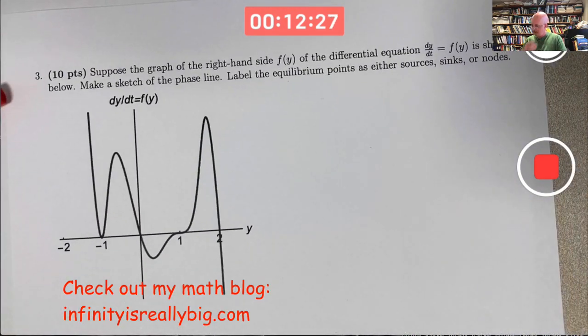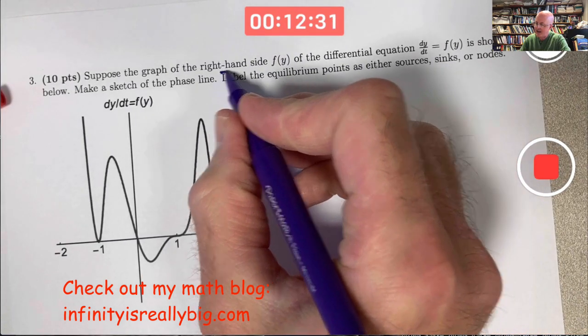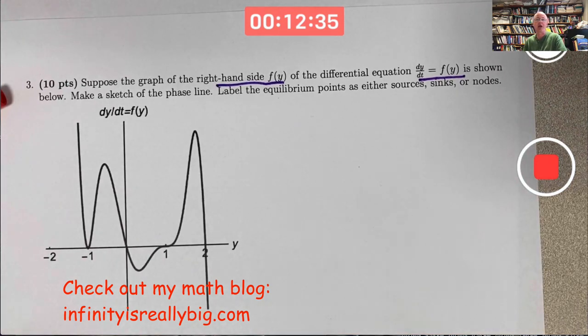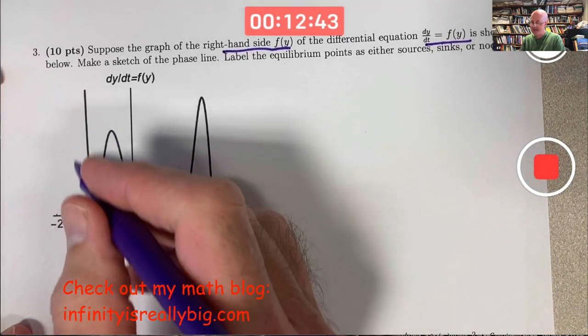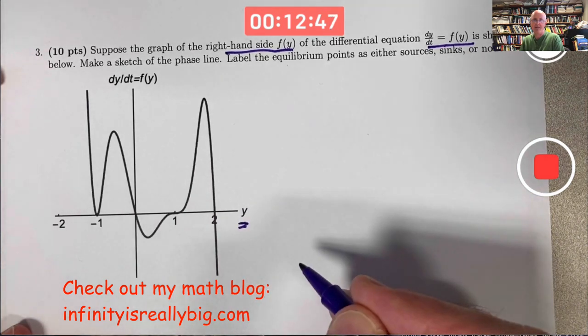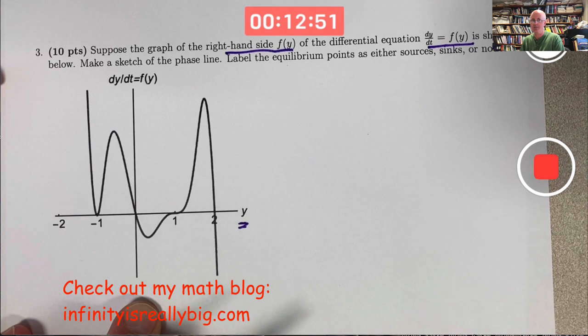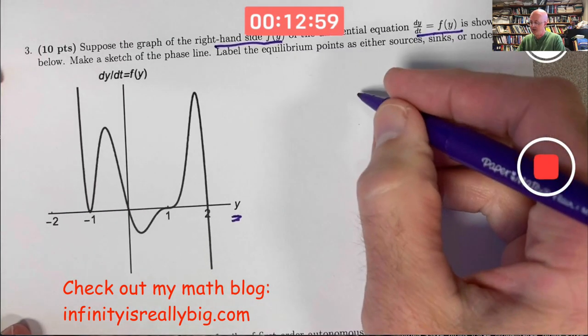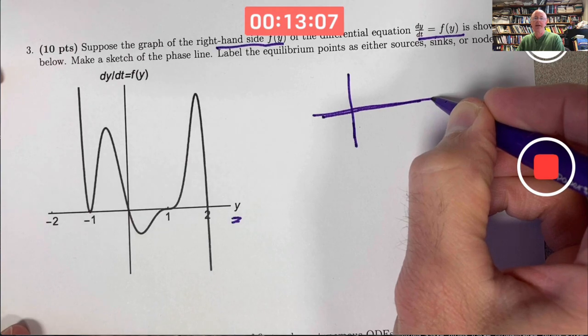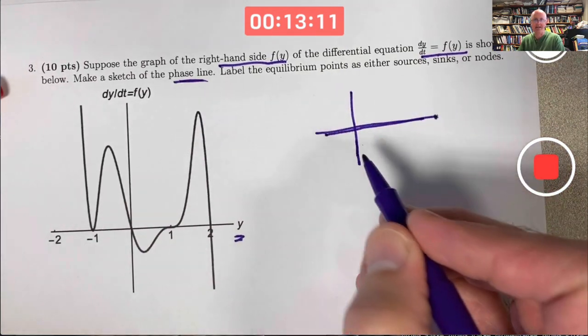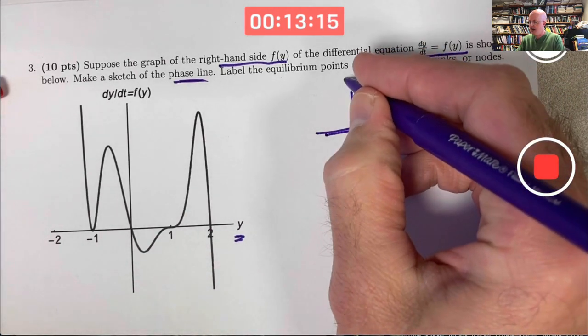The next page involves qualitative ideas, phase lines, and bifurcations. Problem three: I'm giving the sketch of a right-hand side f of y of a differential equation dy/dt equals f(y). That's called an autonomous differential equation when the right-hand side only depends on y and not t. Careful — this graph is the graph of a function of y. This is not a solution of the differential equation. It helps you figure out the nature of solutions. We're after a phase line, which compresses all the information in the slope field onto a vertical y-axis.